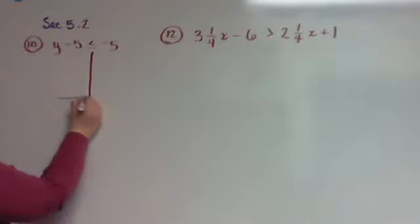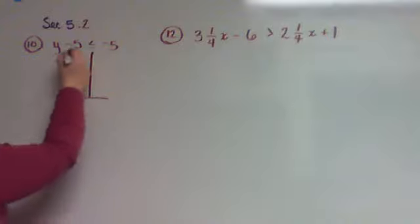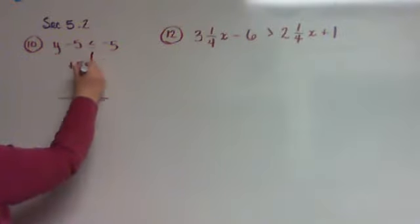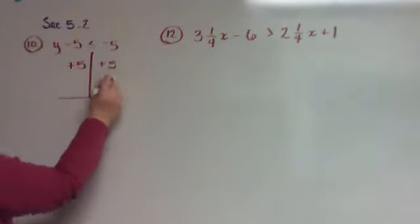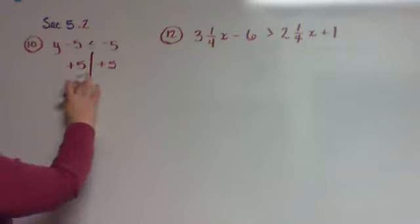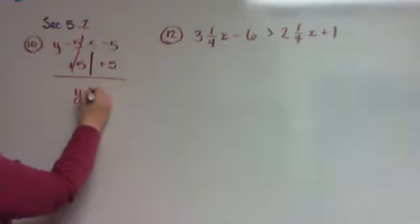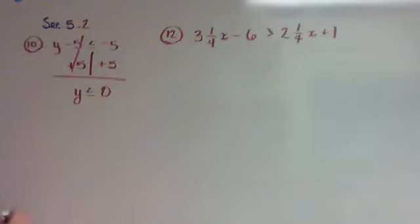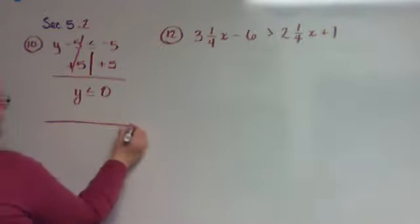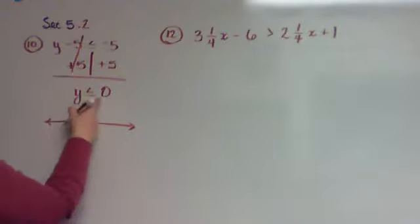Until then, we're going to work it just like we do a normal equation. So I have to add 5 to both sides. That gives me y is less than or equal to zero.